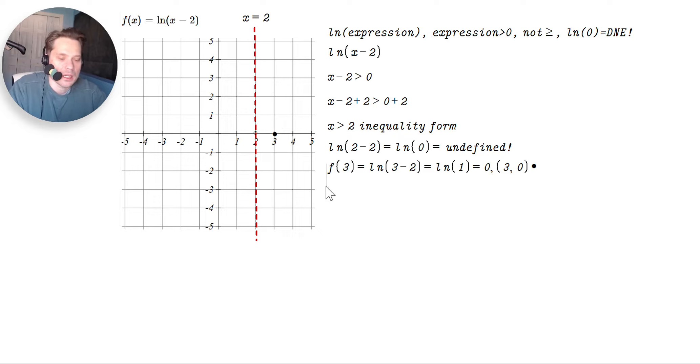If you try f of something close to 2, but like to the right of it, but very close to it, but still to the right of it. So like f of 2.001, something like that. So to the right of 2, but very close. So you're going to have ln of 2.001 minus 2, which is ln of 0.0001.